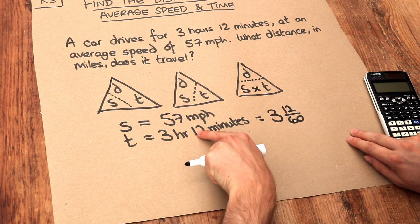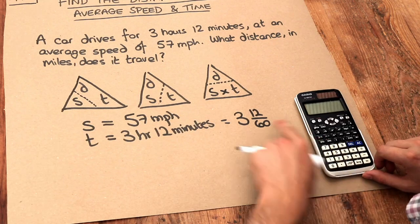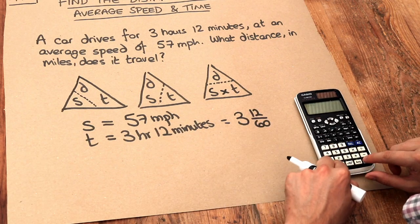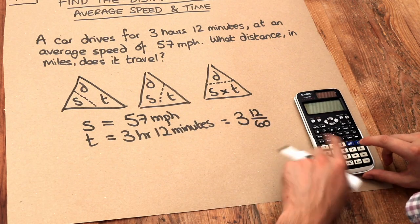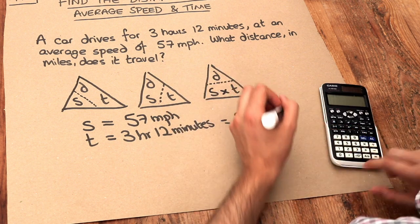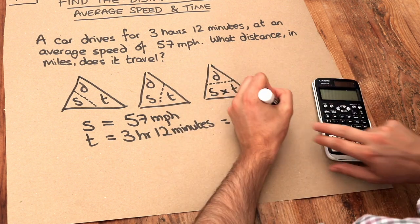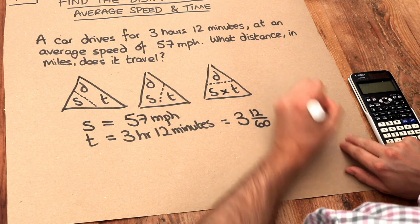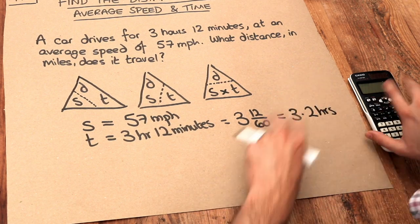If we actually did 12 over 60 on our calculator to work that out as a decimal, we can see it's a fifth, which is 0.2. So we can press the SD key, we can see it's 0.2, so it's 3.2 hours. And then we can just plug in our formula.